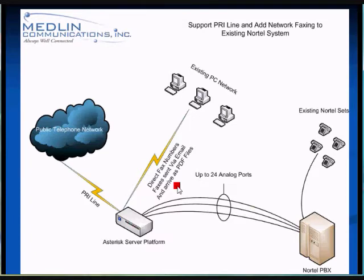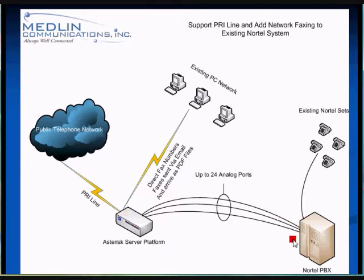What we're proposing is you get your PRI line from whoever you want — Simcoe, XO, FirstCom — and we feed it into this Asterisk server platform. In that platform we're able to define routes and all the routing logic we need to send the calls out over these 24 analog ports to your existing Nortel PBX.